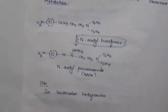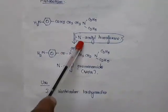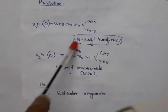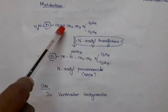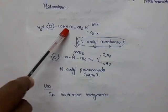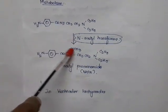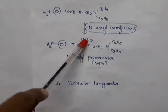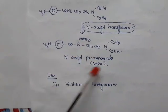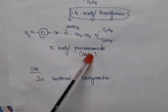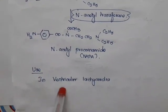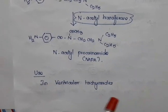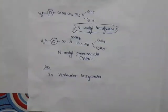Regarding the metabolism of procainamide: the enzyme N-acetyltransferase transfers an acetyl group to the nitrogen. Instead of the hydrogen on the nitrogen, an acetyl group is added, producing N-acetylprocainamide, which is the main metabolite. Procainamide is used in the treatment of ventricular tachycardia.